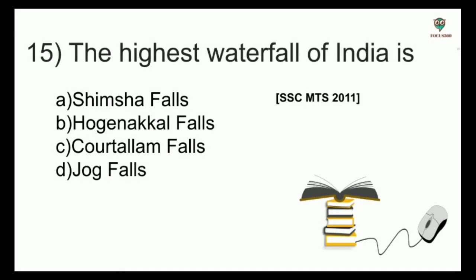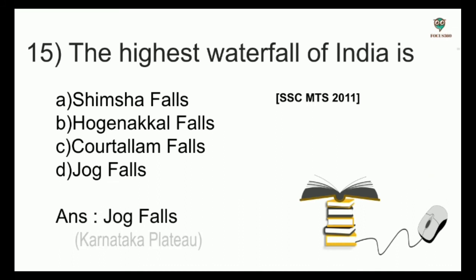The highest waterfall of India is — options: Shimsha Falls, Hogenakkal Falls, Kortalam Falls, Jog Falls — and the answer is Jog Falls. It is located in the Karnataka Plateau.